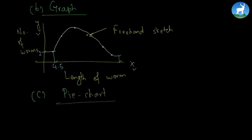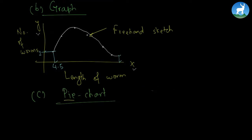The number goes on increasing and finally there's a sharp decline. This is what we call the graph. Now let's look at another kind of chart which is called a pie chart. It is rightly called so because it looks like a pie.